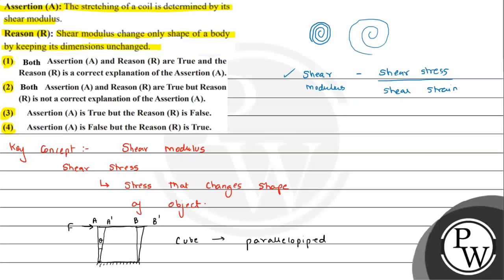So the stretching of the coil is determined by its shear modulus - this is perfectly true. The reason that shear modulus changes only the shape of a body by keeping its dimensions unchanged is also true, and the reason is the correct explanation for the assertion. So option 1 will be the answer.